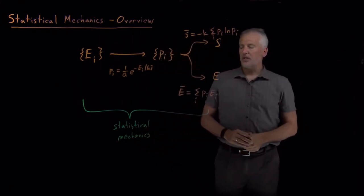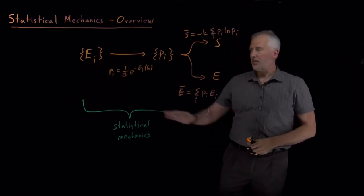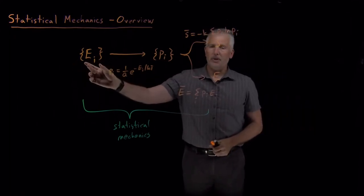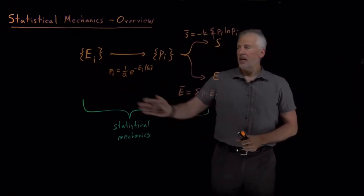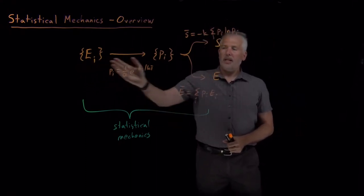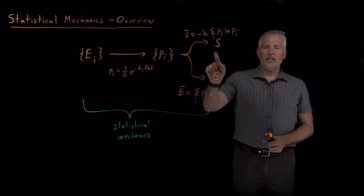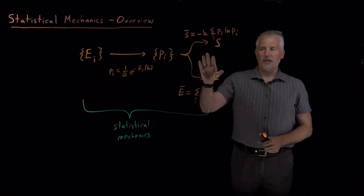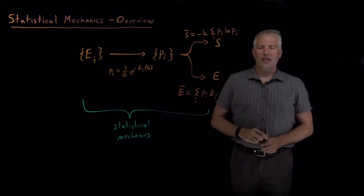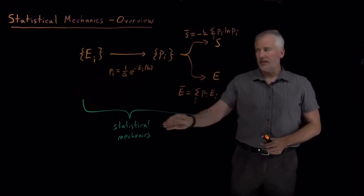The whole goal of statistical mechanics is to be able to stop talking about individual microscopic properties of the system, the individual energies and which particles have which energies, the microstate of the system, and instead be able to talk about collective properties of the system: the entropy of the system as a whole, the energy of the system as a whole.